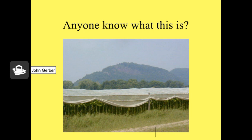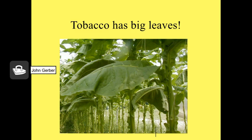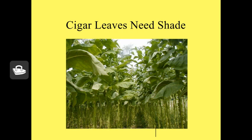If you've ever driven in the Connecticut River Valley during summertime, you may have seen fields with shade cloth over them. This is shaded tobacco, used to cut down the amount of light the plant receives. This makes for a thinner leaf, and a thin tobacco leaf can be used as a cigar wrapper — a higher quality product. The tobacco leaves underneath the shade cloth can get very large, but because they're grown in shade they're very thin. In tobacco grown in the shade there's only one layer of palisade cells, making a very thin leaf preferred for cigar wrappers.